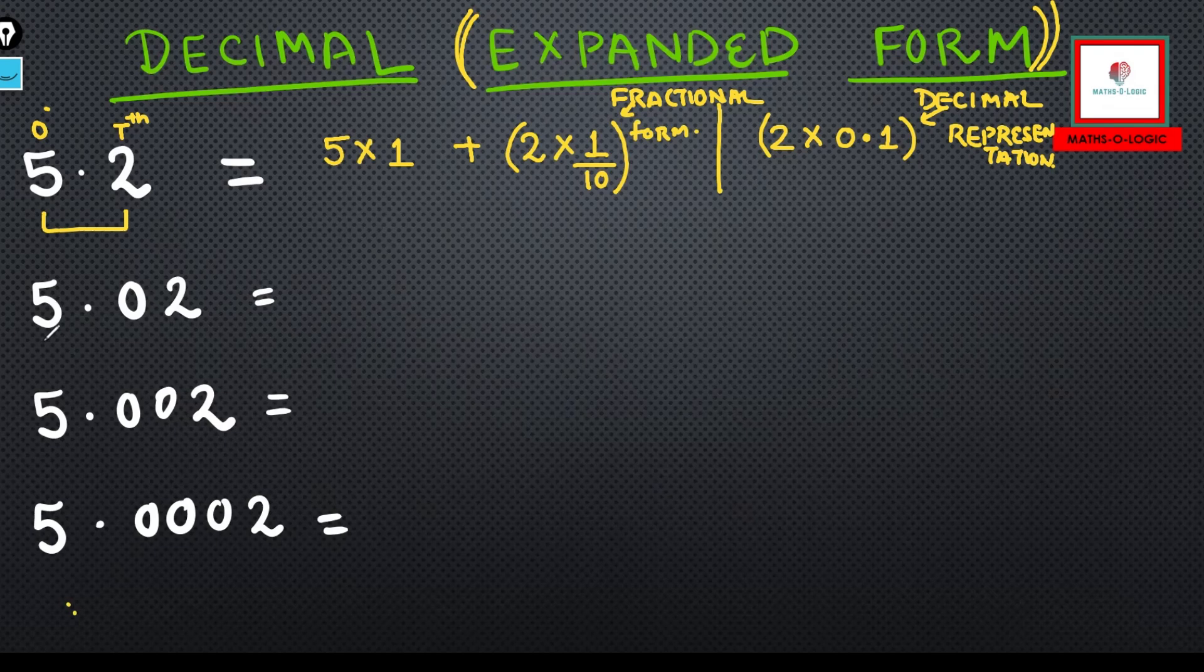Let's write here five ones. Then when it changes the place, this is the tenth place and this is the hundredth. Let's write here, and you can also try in between. This is 2×1/100.